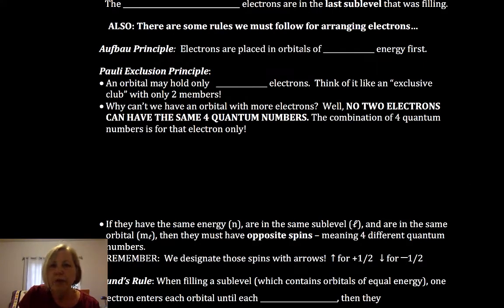Let's learn a few rules. Aufbau principle, that's German for buildup. And the Aufbau principle says as we're taking the total electrons in an atom and placing them into the model, electrons are placed into orbitals of the lowest energy first.